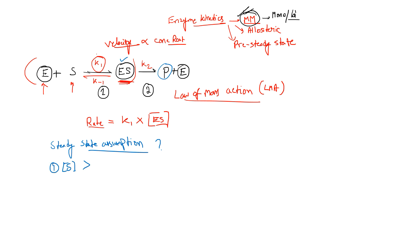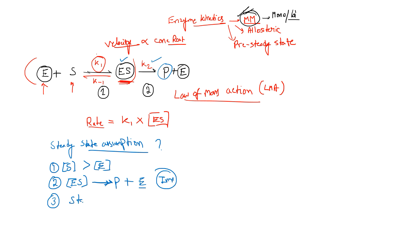The steady-state assumptions are: first, the concentration of substrate must be more than the concentration of enzyme. Second, the enzyme-substrate complex conversion to product and enzyme release is irreversible — only in one direction, not backward. Third, the reaction is in steady state, meaning no other factors hamper it from outside. If any inhibitor comes in, the value will change, so we must ensure no inhibitor is acting, no cooperative binding is occurring.